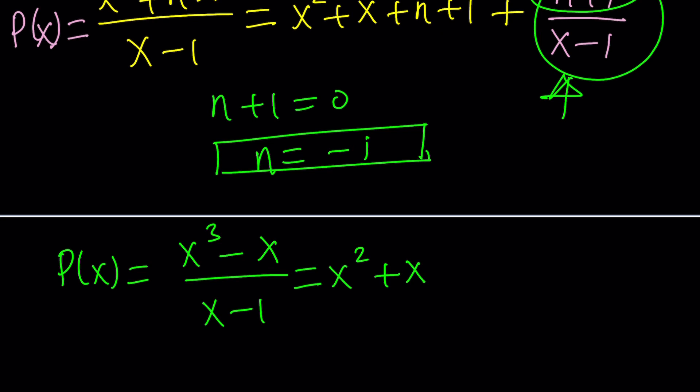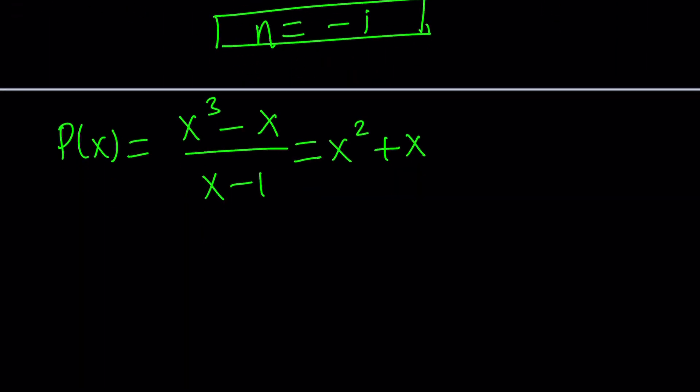And plus 0. So that's the answer. In other words, p of x is x squared plus x and n is negative 1. Great. We just solved the problem, but is that the only way to do it?